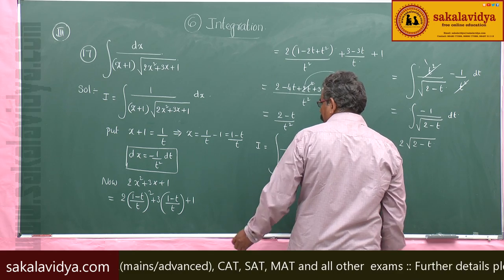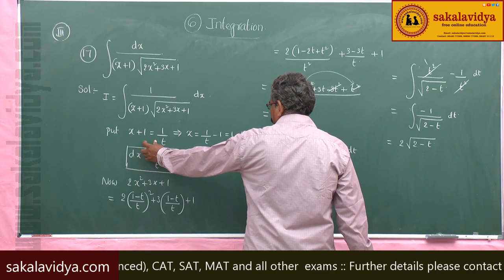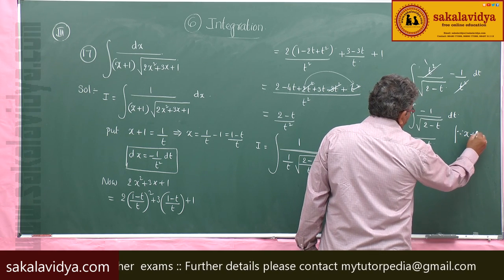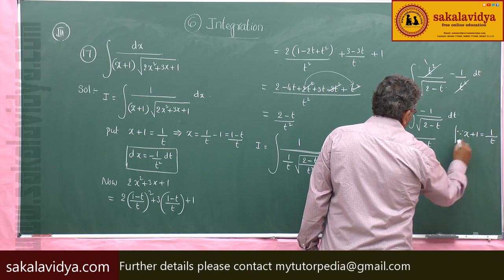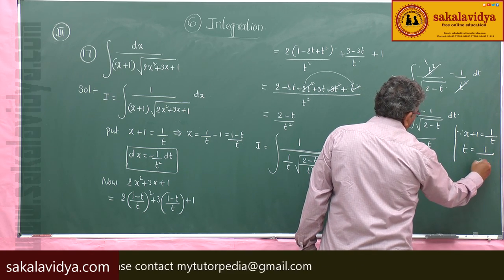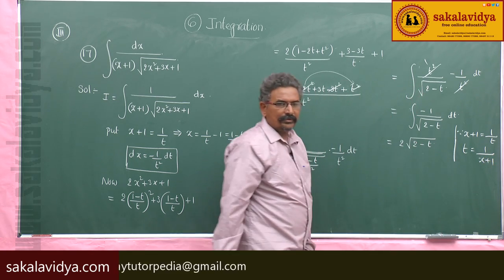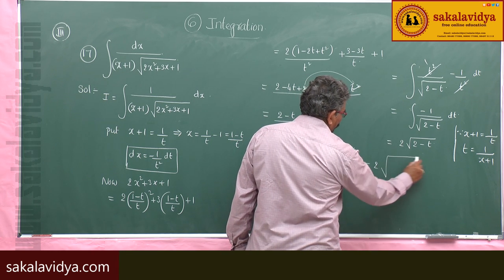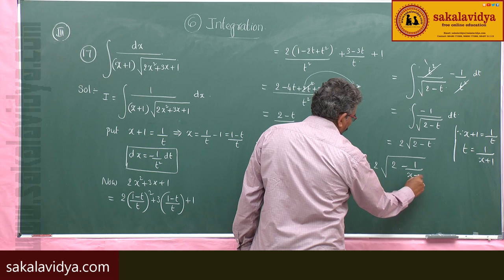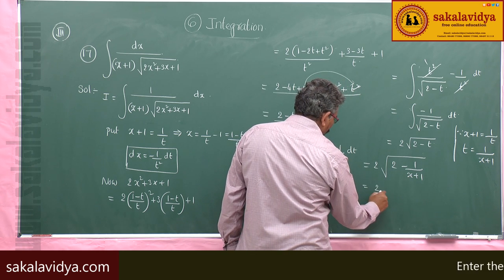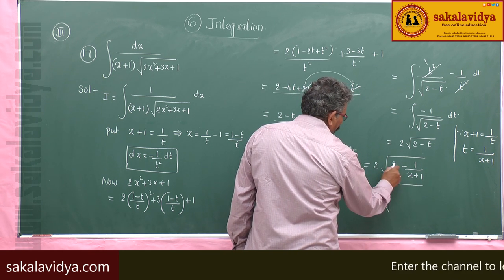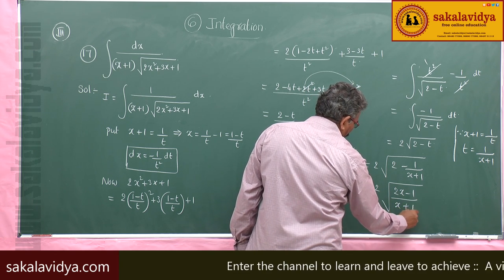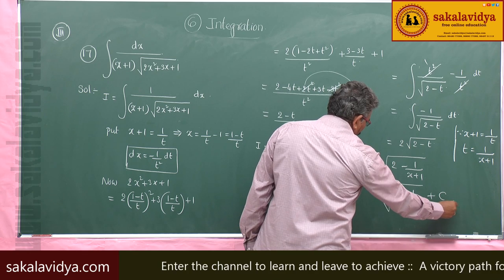What is t? Since x plus 1 equals 1 by t, t equals 1 by (x plus 1). Substituting back: 2 root of (2 minus 1 by (x plus 1)), which equals 2 root of (2x minus 1) by (x plus 1), plus constant of integration.